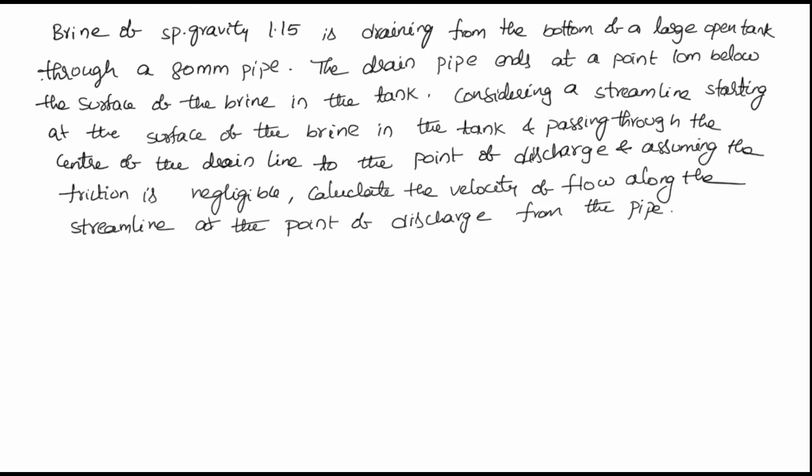That means from the surface of the brine in the tank to where the pipe ends there is a height difference of 10 meters. Considering the streamline starting at the surface and passing through the center of the drain line to the point of discharge, assuming friction is negligible — so there will be no losses. We need to calculate the velocity of flow at the point of discharge. First we have to draw the diagram.